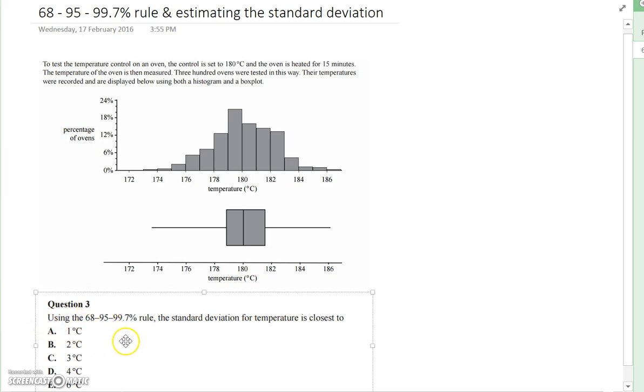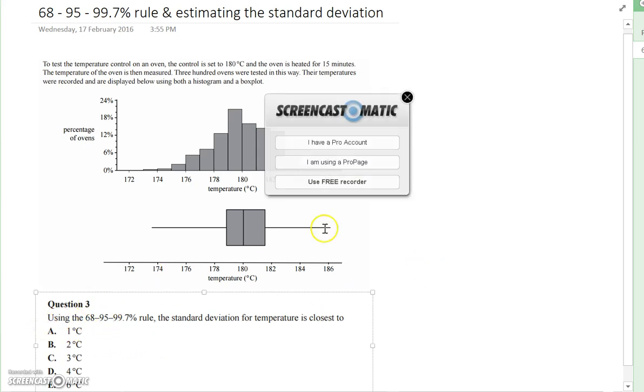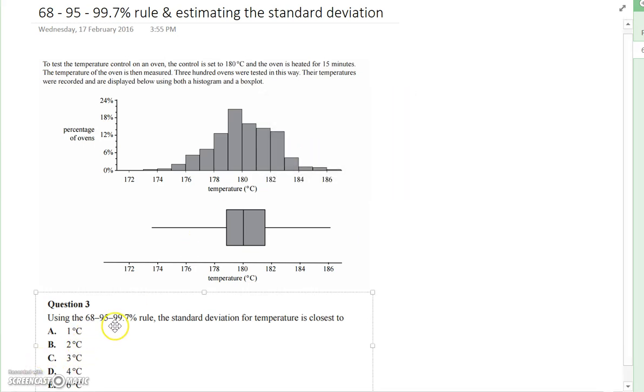Question 3 says: using the 68-95-99.7% rule, the standard deviation for temperature is closest to A, B, C, or D. So what do we need to know?